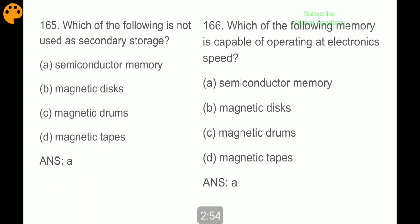Which of the following is not used as secondary storage? Semiconductor memory is not used as secondary storage. Magnetic disc, magnetic drum, and magnetic tapes are used as secondary storage.